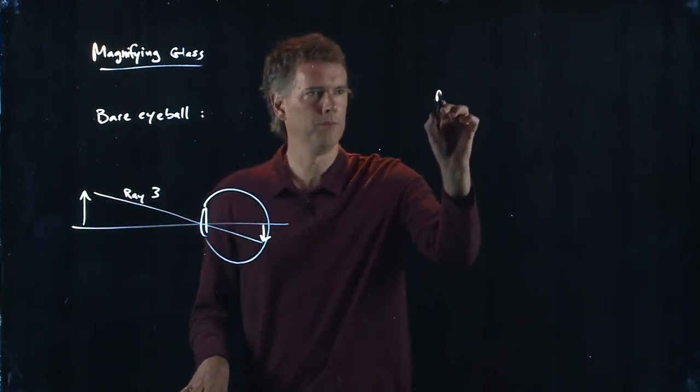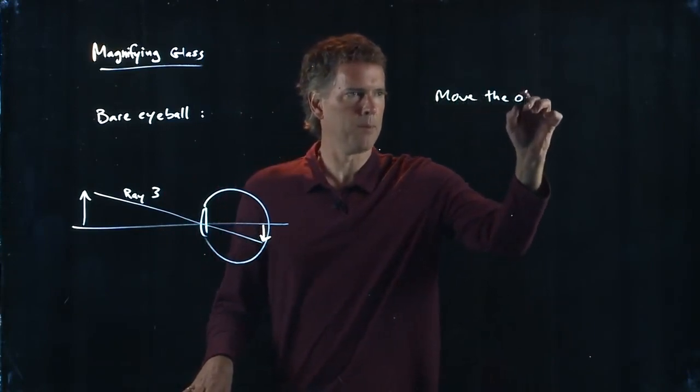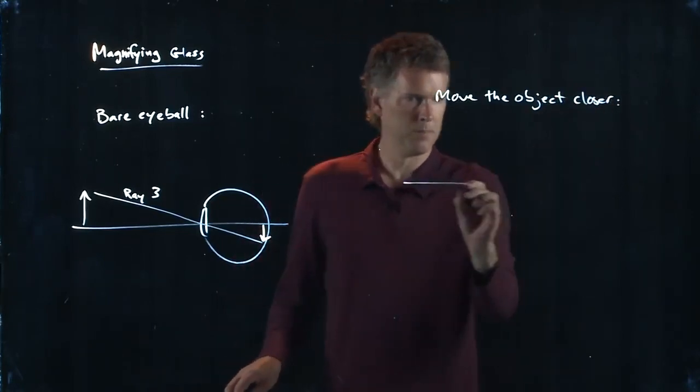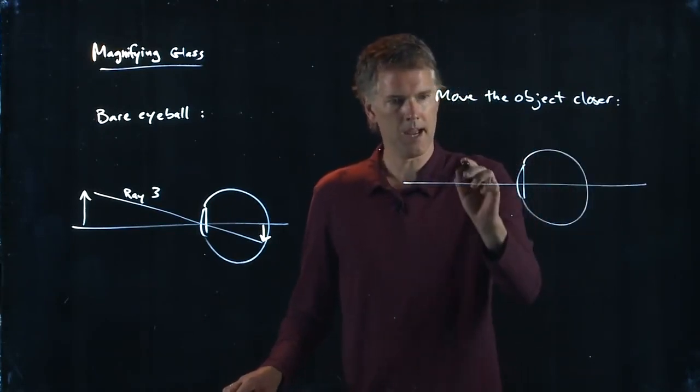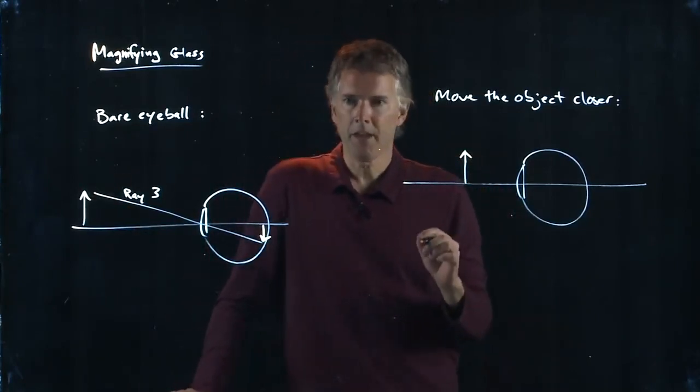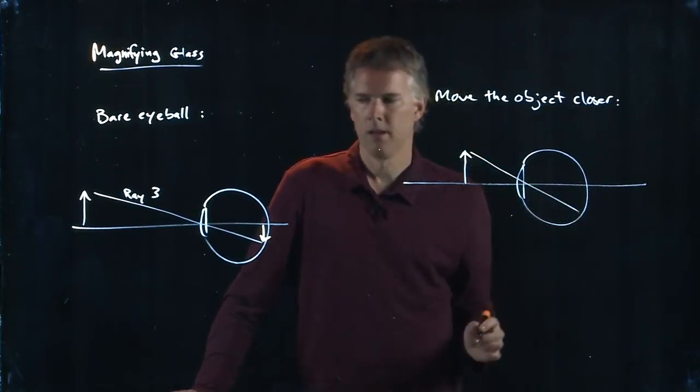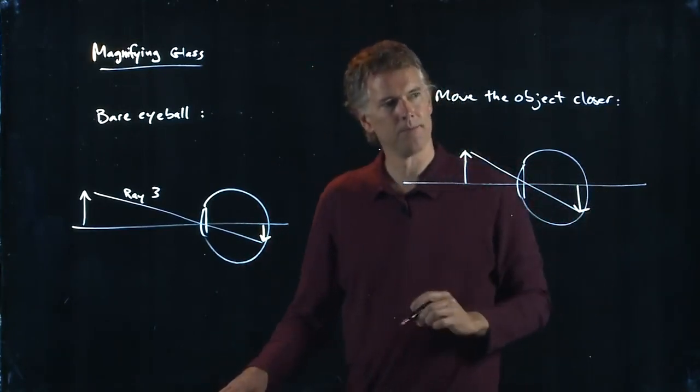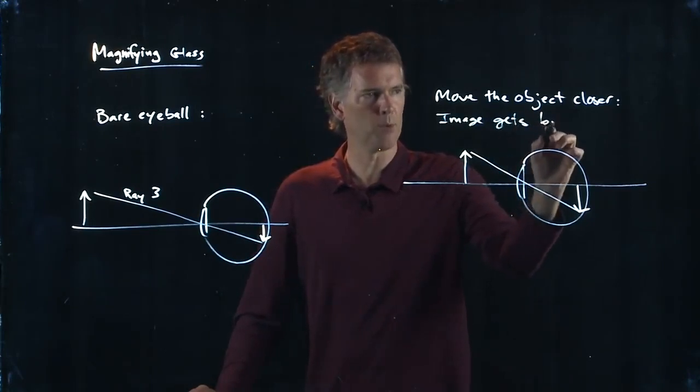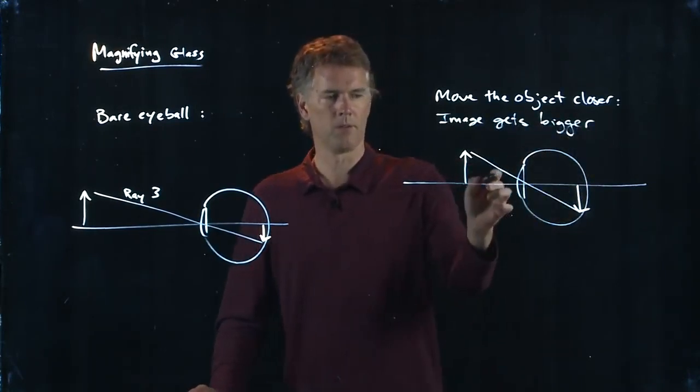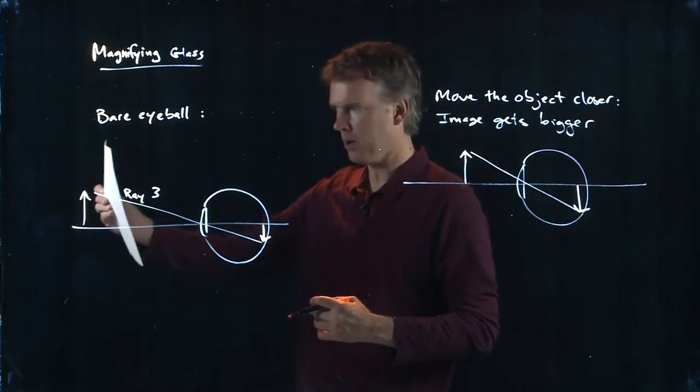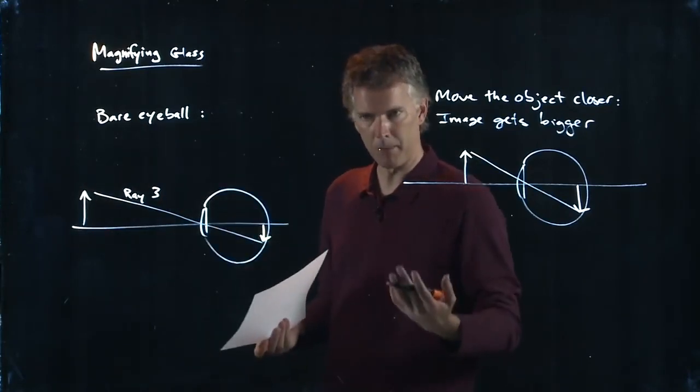But if I move the object closer, what's going to happen? Here's my picture again. When I move the object, if I think about ray 3, that image got bigger. It got bigger because ray 3 was steeper. Ray 3 came in at a steeper angle. You know this, of course. If I look at text this far away, it's pretty small. As I bring it in, it gets bigger and bigger and bigger.